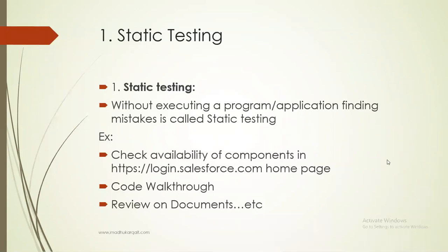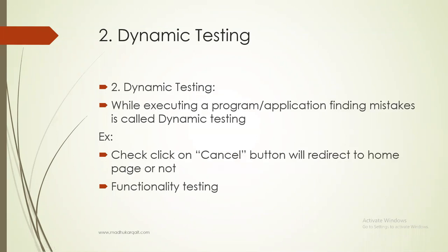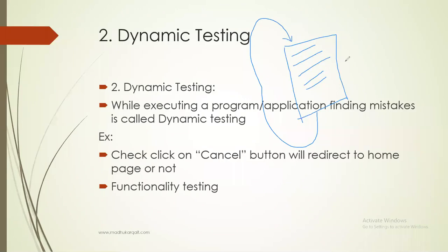Next is dynamic testing. Static testing is without executing. Now, while executing a program or application, finding mistakes comes under dynamic testing. With the same program, instead of reading line by line, I will run it and observe whether the expected output is coming or not. When we run and check the expected output, this kind of testing is called dynamic testing.